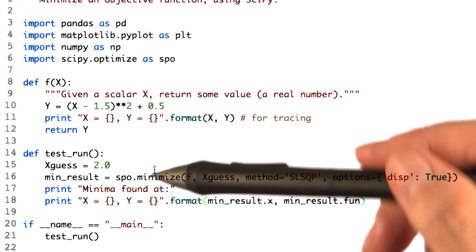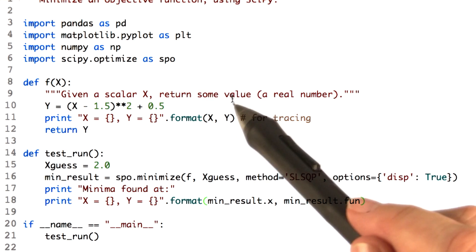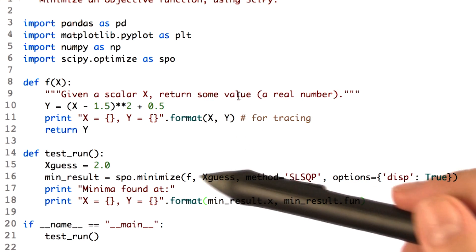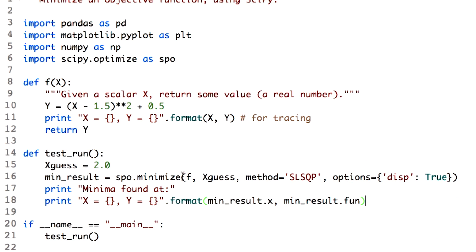Anyways, that's it. That calls the minimizer. The minimizer repeatedly calls our function and finds the minimum value. Then it prints out those results. Let's try a test run and see what happens.